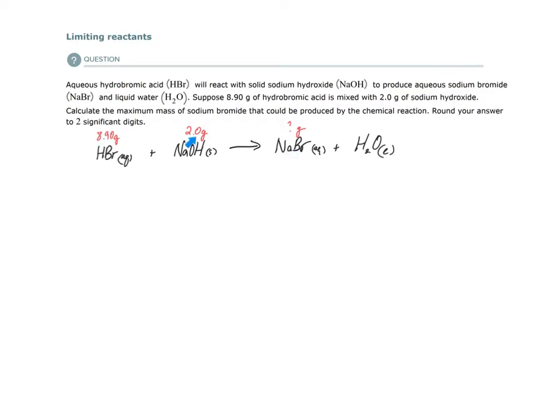We are given amounts for both of our reactants. They tell us that I have 8.9 grams of this and 2.0 grams of this to start. When you have amounts for more than one of your reactants, then what you need to do is determine which reactant is the limiting reactant. So in order to figure out what our limiting reactant is, we're going to have to convert from 2 grams of sodium hydroxide to a mass of NaBr or an amount of NaBr. And we're going to have to convert from 8.9 grams of HBr to NaBr to see which one gives us the smallest amount.